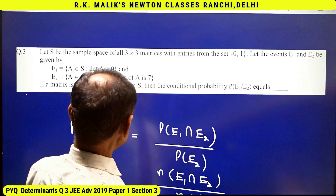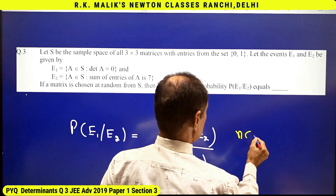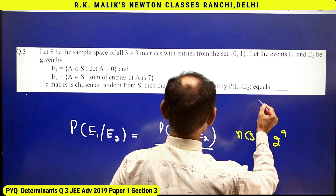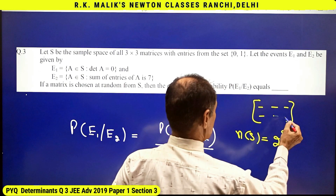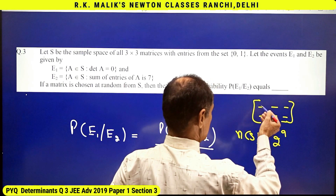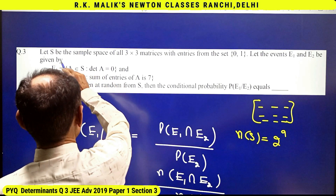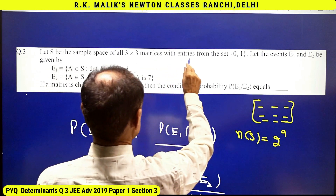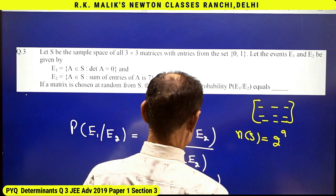Just for reference, the number of elements in set S is 2^9, because there are 9 places and each place can be filled in two ways — 0 or 1 — since S is the sample space of all 3×3 matrices with entries from the set {0, 1}. However, this value is not required further as it cancels out.